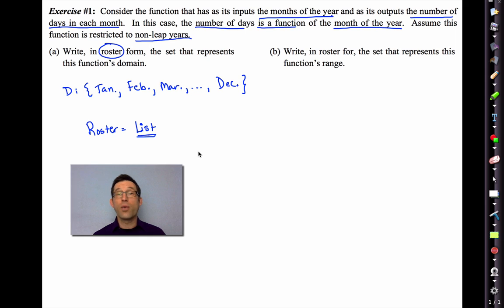Letter B says write in roster form the set that represents this function's range. Well, this might be a little bit trickier, but if we restrict ourselves to non-leap years, then a month can either have 28 days, if it's February, or 30 or 31 days. That's the range of our function. So it's pretty easy. The domain is all the allowable inputs. The range is all the outputs. By the way, think about the fact that there's many things that just aren't allowable for the domain. For instance, you wouldn't allow the domain to include the state of Illinois because Illinois is not a month. Therefore, it's simply not allowable for this function. Pause the video now if you need to write any of this down, and then we'll clear out the text.